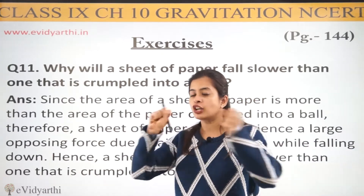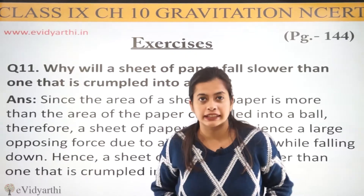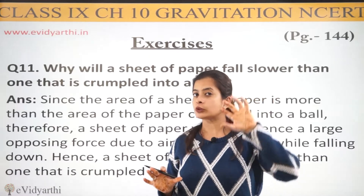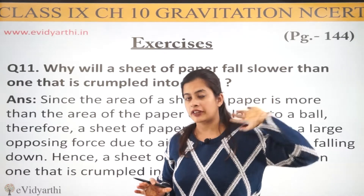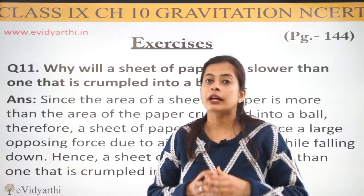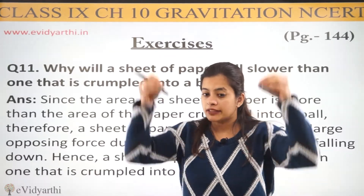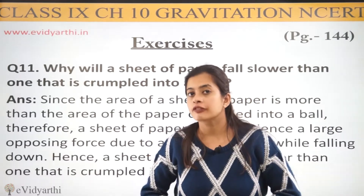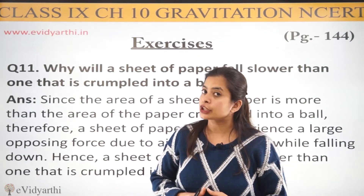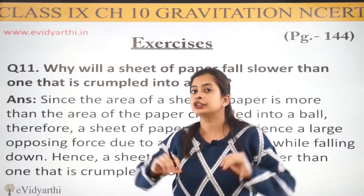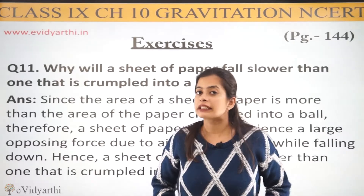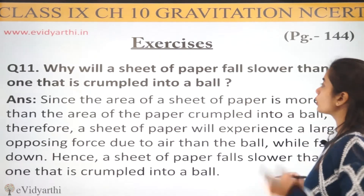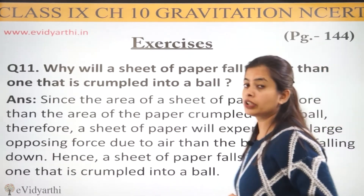Kya karte the na? Paper ko phek ke, aise roll karke ek doosre ki taraf phekte the. So similar case hai — ek mere paas poora plain paper hai, aur uski ball bana ke usko pheka gaya. So dono mein comparison kya puchha ja raha hai, ki whenever we fall them — jab bhi hum unhe release karenge aur free fall ho raha hai — to aisa kyu hai ki humara plain paper, which is a flat sheet, woh zyada time leta hai niche girne mein? So why will a sheet of paper fall slower than one that is crumbled into a ball?